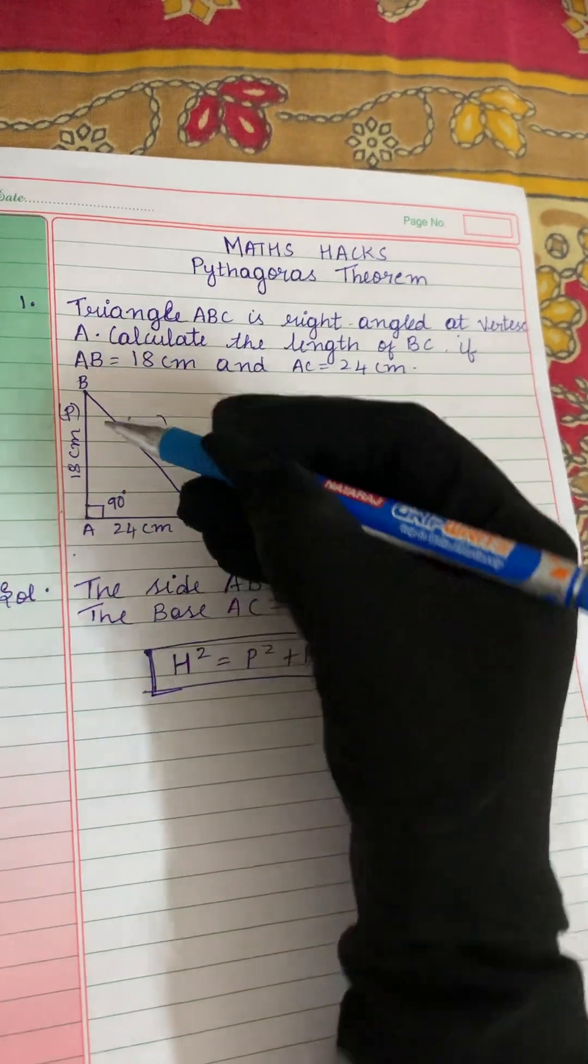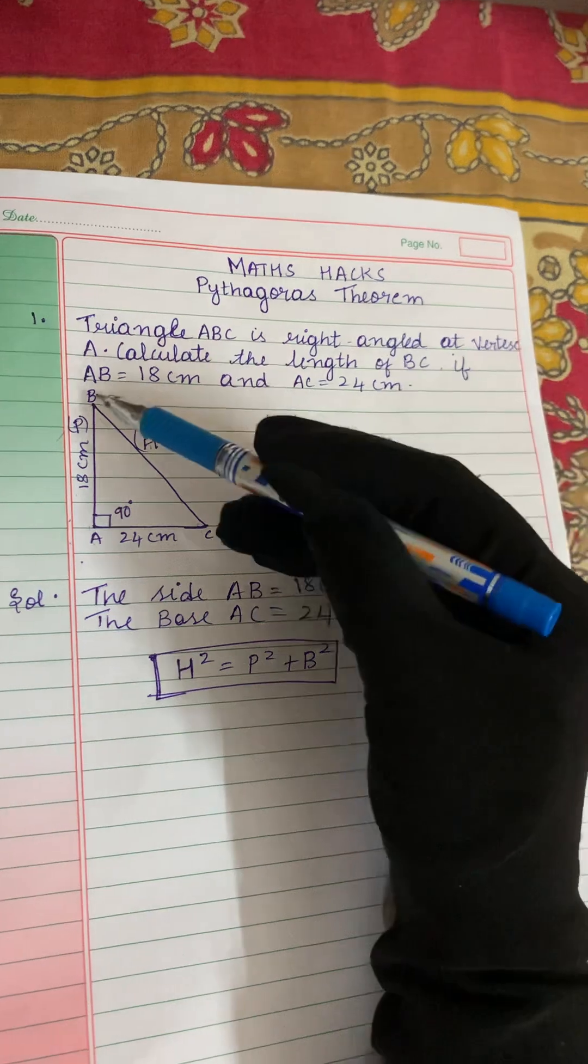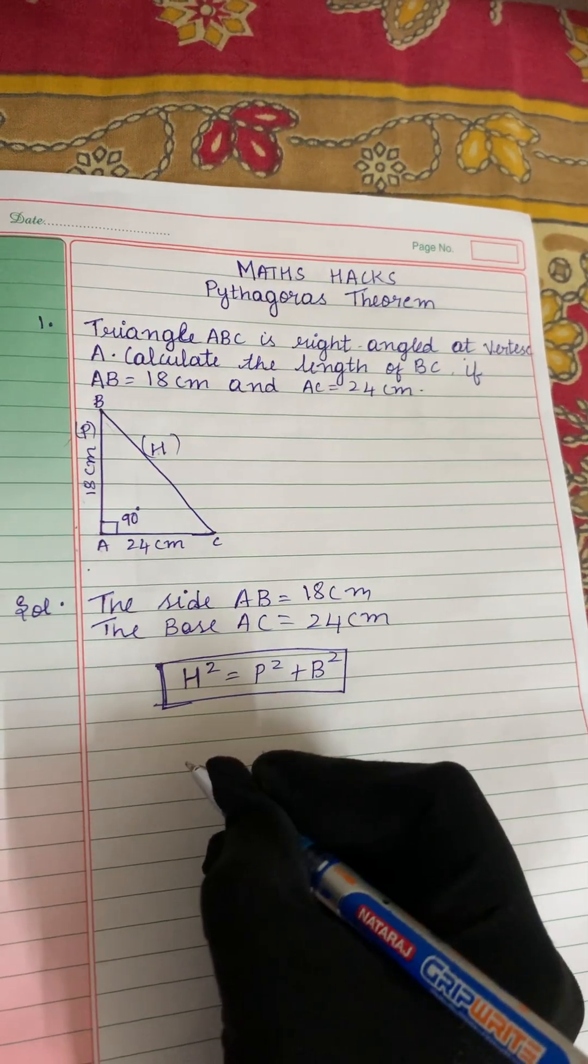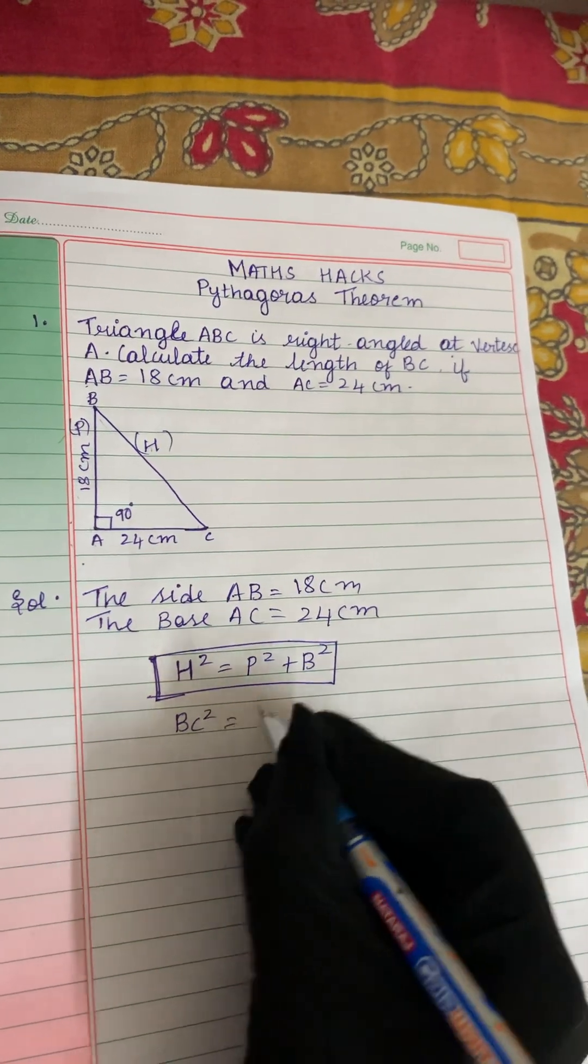What is H²? H is hypotenuse. Which is hypotenuse here? The longest side. So the longest side is BC, which we have to find out. We don't know the longest side. So it is BC. We will write here BC² equals P².